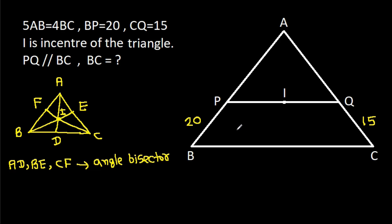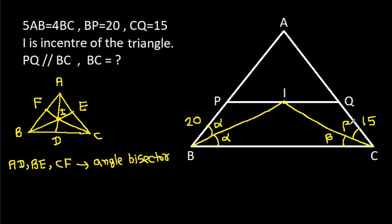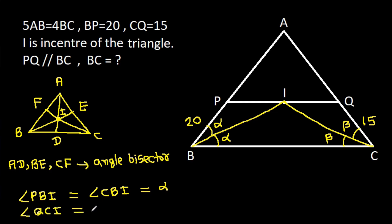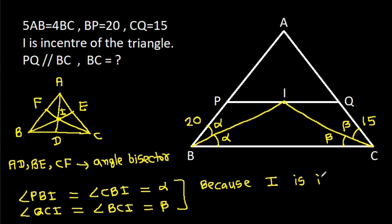So here, if we join BI, then these two angles will be equal — suppose alpha. And if we join CI, then these two angles will be equal — suppose beta. Angle PBI will be equal to angle CBI, that is alpha, and angle QCI will be equal to angle BCI, that is beta, because I is the incenter.